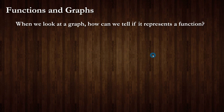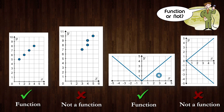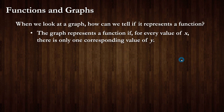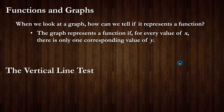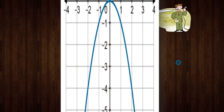When we look at a graph, how can we tell whether or not it represents a function? We're really just looking at x values and determining whether there's more than one corresponding y value. There's something called the vertical line test that formalizes this. The graph represents a function if for every value of x there's only one corresponding value of y. The vertical line test states: if any vertical line passes through more than one point on the graph, the relation is not a function. In other words, if you draw a vertical line at a given x value and it hits the graph in more than one spot, you do not have a function.